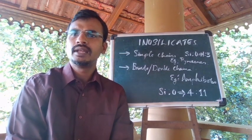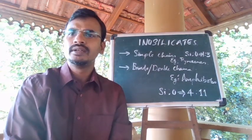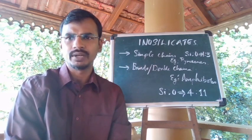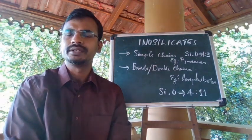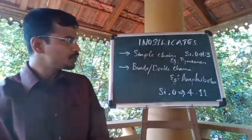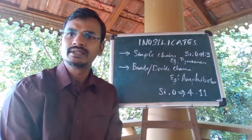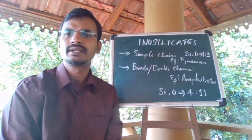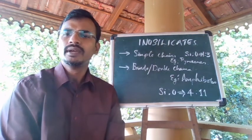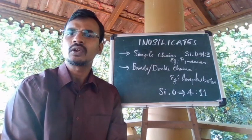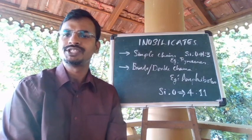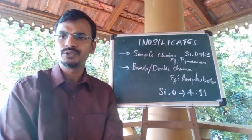In inosilicate structures, unlike nesosilicates or orthosilicates where the SiO4 tetrahedra was isolated, here SiO4 is shared. There are two types of inosilicates or chain silicates: the first one is single chain inosilicates or simple chains, and the second one is band structure or double chain structure. In single chain silicates, two of the four oxygen in each SiO4 tetrahedra are shared to give a ratio of Si to O as 1 to 3.